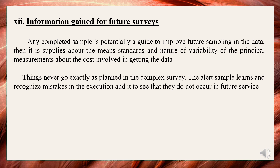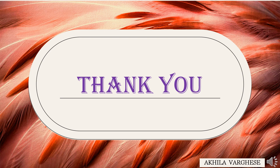Information gained for future surveys: Any completed sample is potentially a guide to improve future sampling. It supplies information about means, standards, and the nature of variability of the principal measurements, as well as the cost involved in getting the data. Things never go exactly as planned in a complex survey. The alert sampler learns to recognize mistakes in execution and ensures they do not occur in future surveys. Hope you understood the principal steps in sample survey. Thank you.